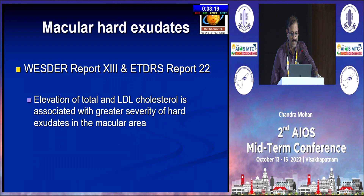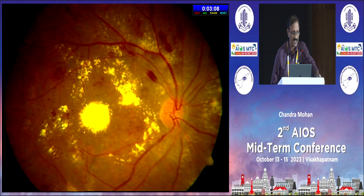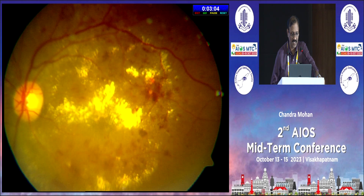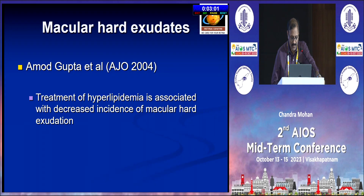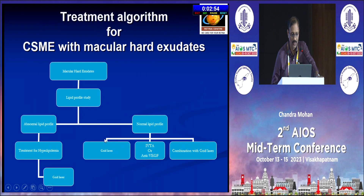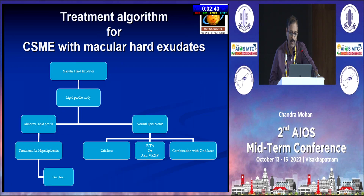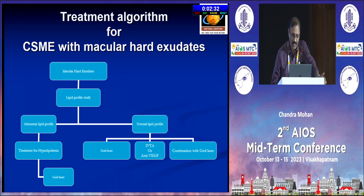The next maculopathy is macular hard exudates. Wisconsin Report 8 and ETDRS Report 22 have clearly shown that elevated total and LDL cholesterol is associated with greater severity of hard exudates. If you have a lot of macular hard exudates, do a lipid profile. If a lipid profile abnormality is present, there is no hurry in treating the macular edema — treat the abnormal lipid profile with lipid-lowering drugs first, then treat the residual edema. If the lipid profile is normal, you can proceed to treat macular edema with intravitreal injections or adjuvant grid laser.